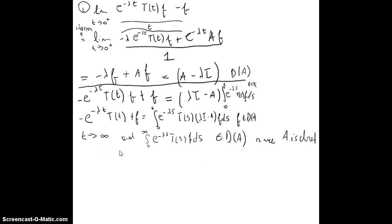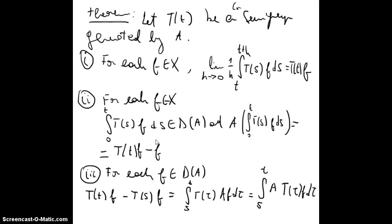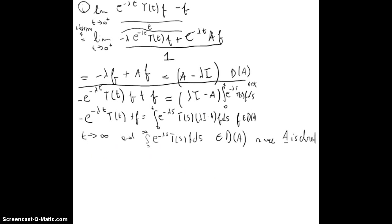Now we're going to take the limit as t goes to infinity. We know that the integral from 0 to infinity of e^{-lambda s} T(s)f ds is in the domain of A because A is closed. Applying the limit as t goes to infinity, since A is closed, the integral in the domain of A stays in the domain of A. We will also use the dominated convergence theorem.